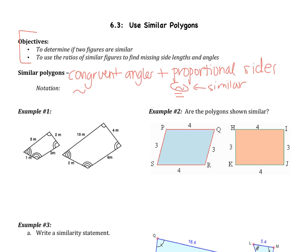Looking at example number 1, we see that all of the angles are congruent. This angle is equal to that one, this angle is equal to that one, this angle is equal to that one, and this angle is congruent to that one. So that's the congruent angles part. Now what does the proportional sides part mean?